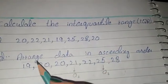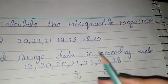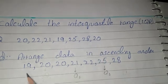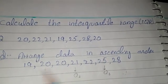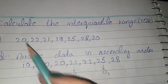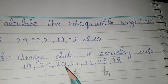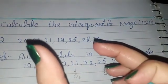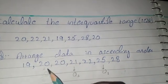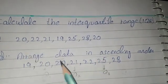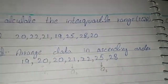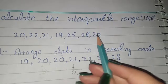We will arrange the data in ascending order. First we write 19, then 20, then again 20 — because 20 appears two times in the data — so we write 20, 20, then 21, then 22, then 25, then 28.